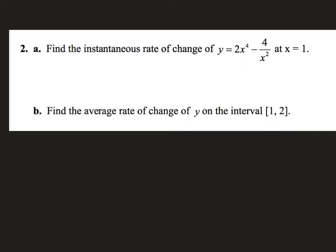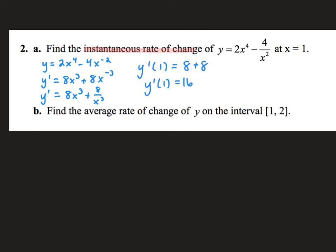In 2a, I'm asked to find the instantaneous rate of change, and that's just code for derivative. I need to prep my function first by rewriting x squared with the 4 using a negative exponent. Now I'm ready to do my power rule: bring down the power and subtract 1 from the power, being careful with negative exponents — subtracting 1 takes me to a negative 3. I clean up the derivative by getting rid of the negative exponent. Since it's asking for the rate of change at x equals 1, I plug in 1 and get y prime of 1 equals 16.